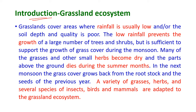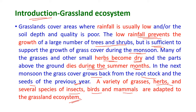The low rainfall in this region prevents the growth of large numbers of trees and shrubs, but it is sufficient to support the growth of grass cover during the monsoon. Many of the grasses and other small herbs become dry during the dry season and the parts above the ground die during the summer months. In the next monsoon, the grass cover grows back from the rootstock and the seeds of the previous year. A variety of grasses, herbs, and several species of insects, birds and mammals are adapted to the grassland ecosystem.